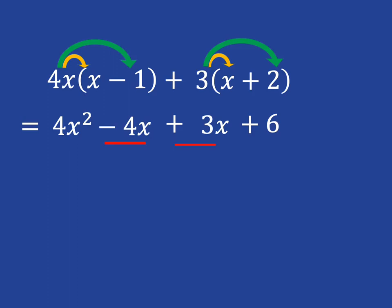The x squared term doesn't have a like term to go with because there's no other x squared term, and the number 6 doesn't have a like term to go with because there's no other plain number.